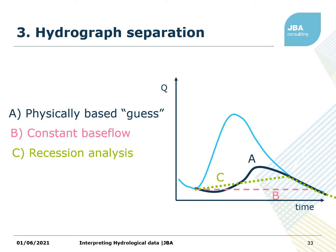Another technique that might be useful is hydrograph separation. The idea here is that the hydrograph is a mixture of water that's come into the system from base flow — mainly groundwater — and surface water runoff; those are the slower and quicker parts of the flow regime. There are different ways you can do it: you can just estimate what you think would have happened if it hadn't been raining, look at a constant base flow, just assume a constant contribution, or do some sort of analysis of the recession — how your hydrograph is dropping down following the flow peak.